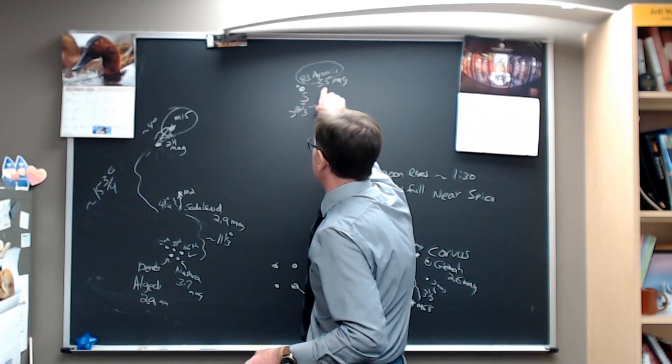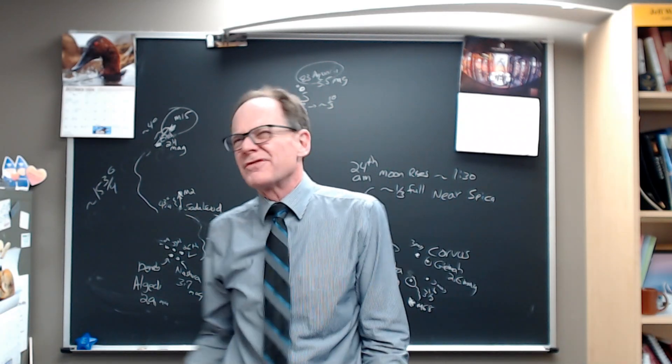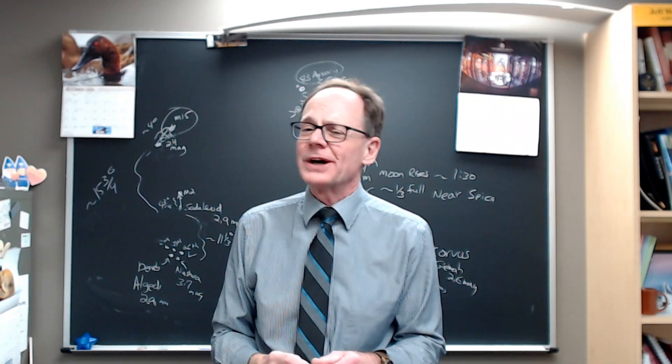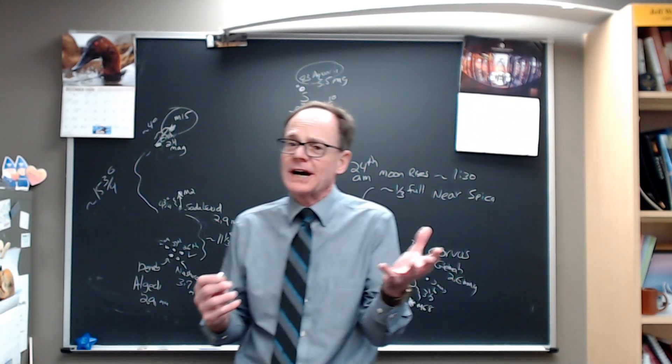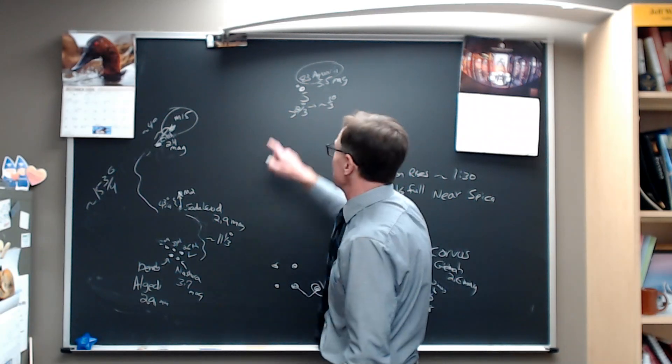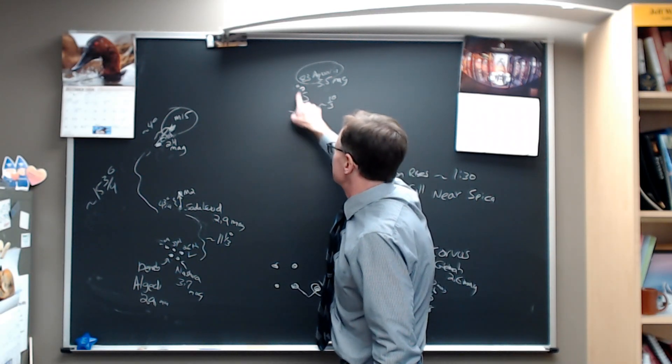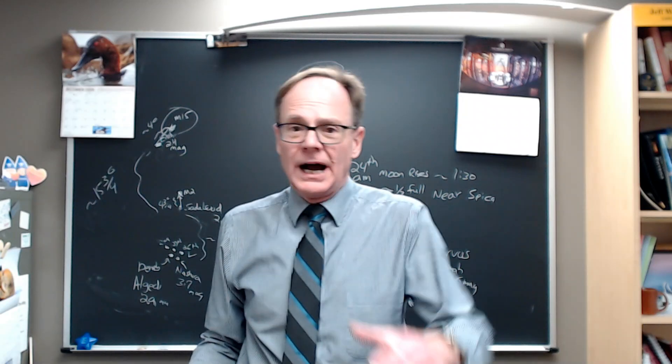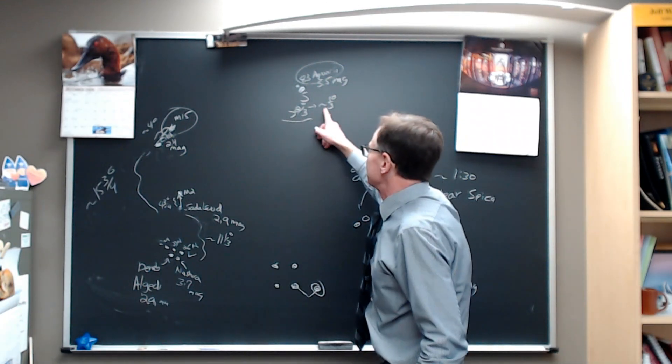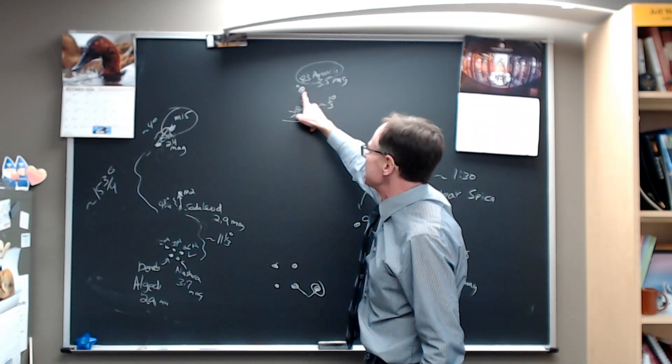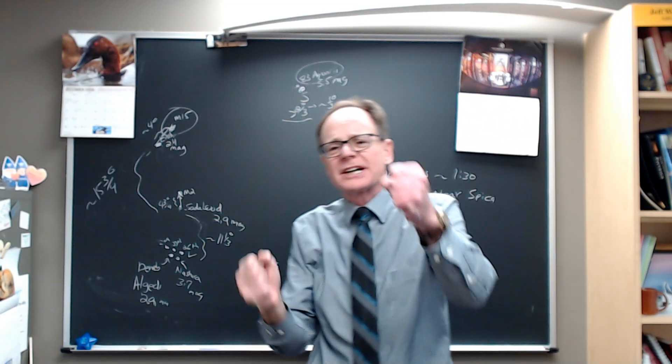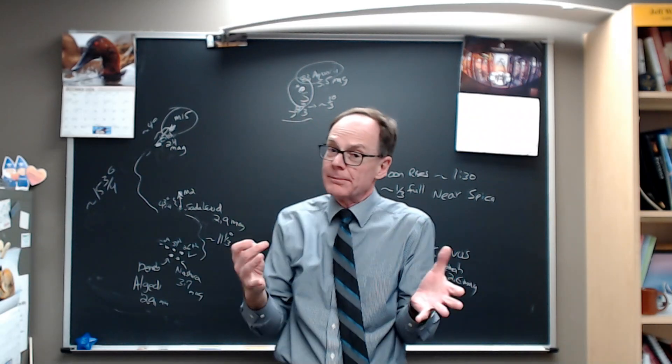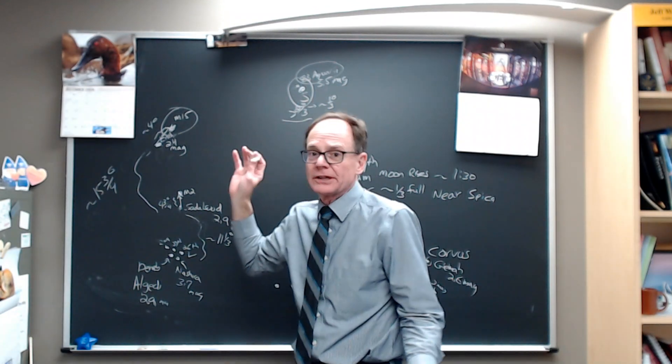I'd use binoculars. 83 Aquarii, the 83 star in Aquarius, is about 5.4 to 5.5 magnitude. That's really right at the edge of what you could see with good dark skies. So if you've got real dark skies, you might be able to see it, but binoculars are going to help you out a lot. It starts the week about a little more than two-thirds of a degree away from the star, and by the end of the week, it's just a little bit more than a third of a degree. So the distance between Saturn and 83 Aquarii gets cut in half this week.